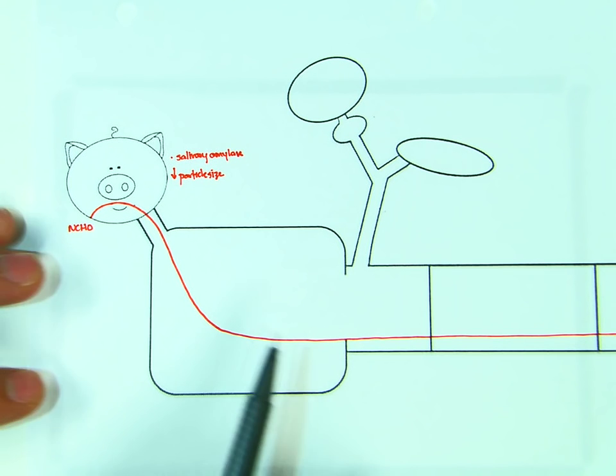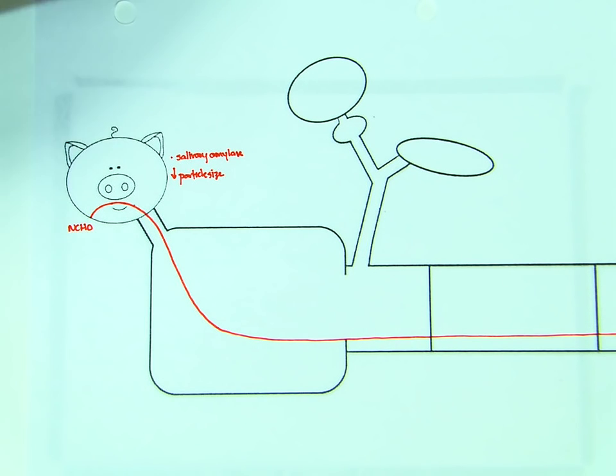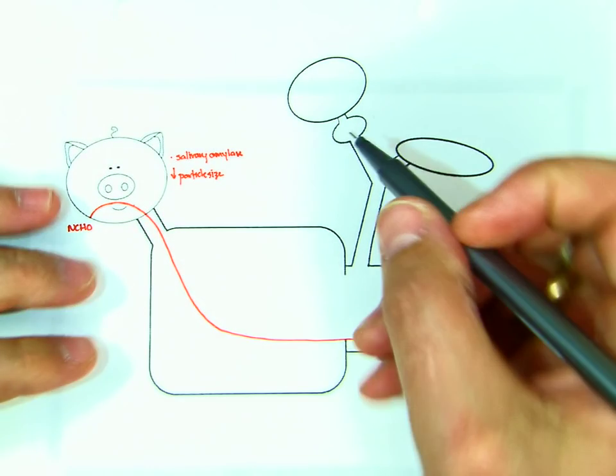Nothing's really going to happen in the stomach, which is kind of not true, but really specifically for carbohydrate digestion, nothing terribly important happens. When we get to the pancreas, or when we show up at the duodenum,